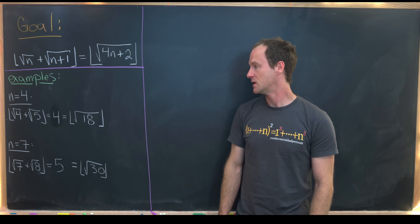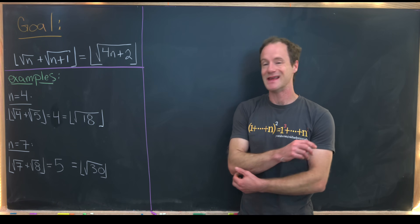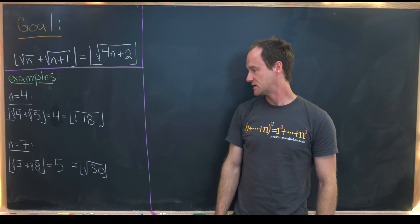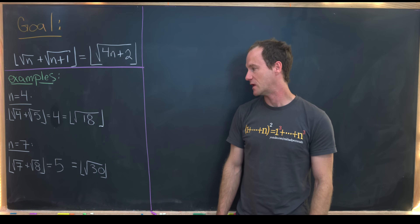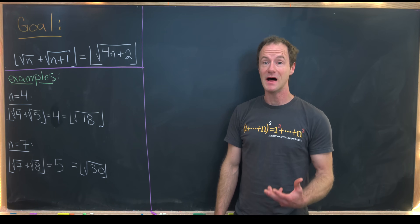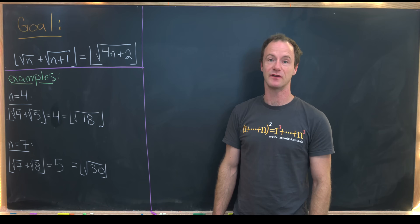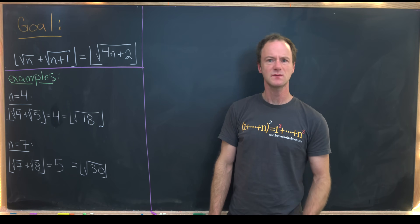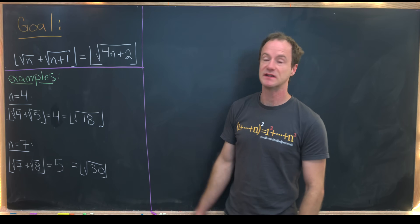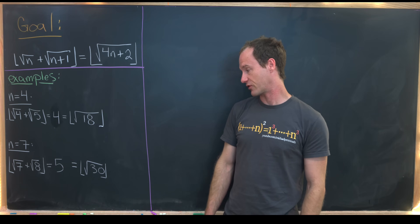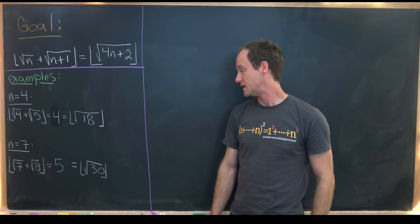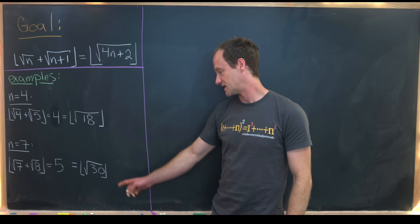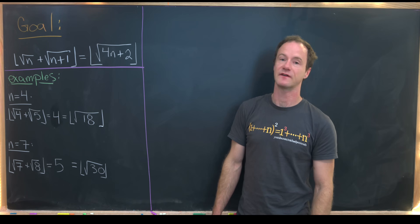Similarly, we can look at n=7. We have the square root of 7 plus the square root of 8 — those are both between 2 and 3, but they add up to something bigger than 5 but less than 6, so the floor is 5. If you plug n=7 into 4n+2 you get 30, and the square root of 30 is between 5 and 6, so the floor is also 5. Both sides agree.